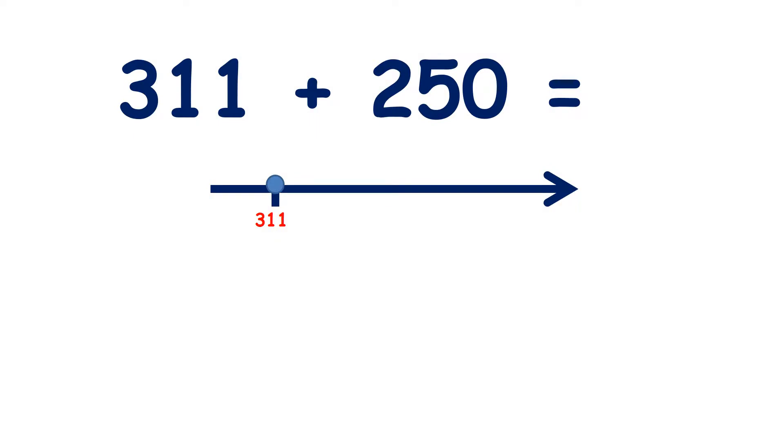We have 311 plus 250, so we need to add 2 hundreds and 5 tens. So if we have 3 hundreds and we add 2 hundreds, that takes us to 5 hundreds, and we still have the 11 we started with.